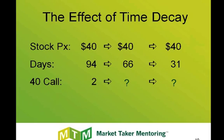Now let's talk about Theta. Say we have a $40 stock and there's three months until expiration. The 40 strike call is trading at two dollars. Let's say a month passes and the stock is right there at $40 a share. What's the new price of my 40 strike call? Go ahead and type in some guesses. Survey says about $1.65.